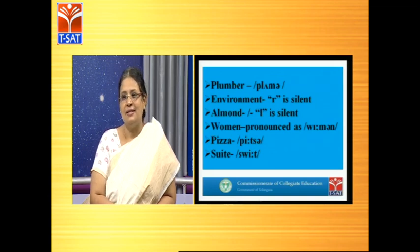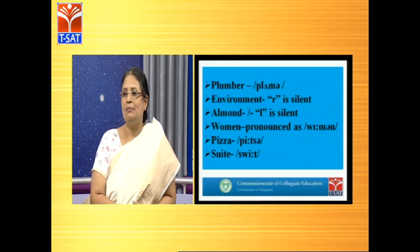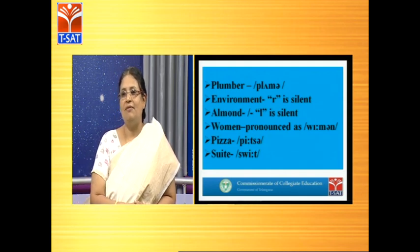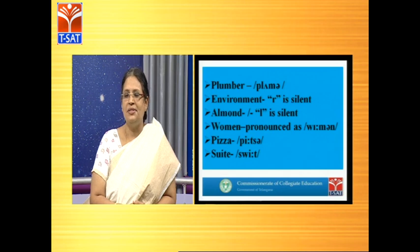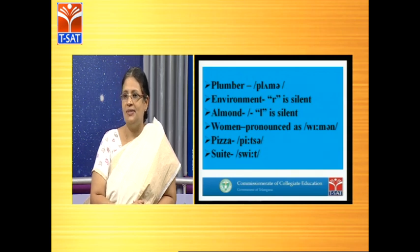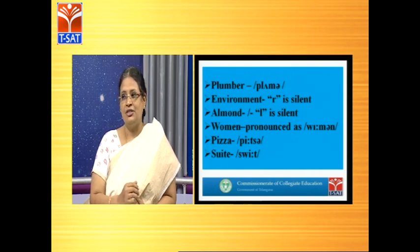There are words with silent letters. 'Plumber' is mostly mispronounced as 'plumber', but it is 'plumber' — B is silent. The next word is 'environment' — most students pronounce it as per the spelling, 'environment', but it has to be pronounced as 'environment' where R is silent. A very interesting word is 'almond' — there is a famous sweet shop with this name, 'Almond House' — L is silent. A very common mistake is the pronunciation of the word 'women' — pronounced as 'woman' by many, but it has to be pronounced as 'women'. And 'pizza' is mispronounced as 'pizza' by many; it has to be pronounced as 'pizza'.